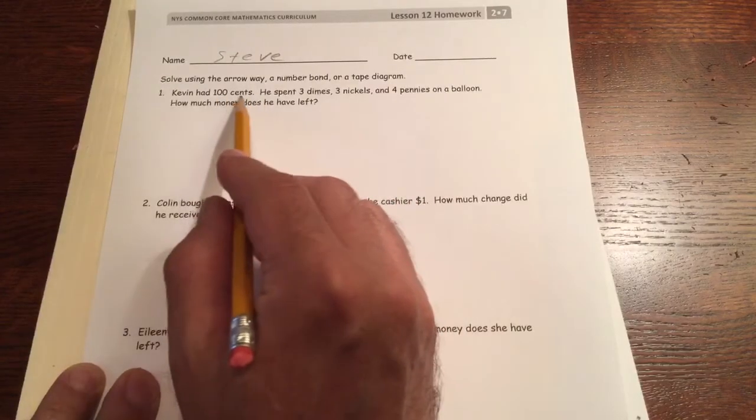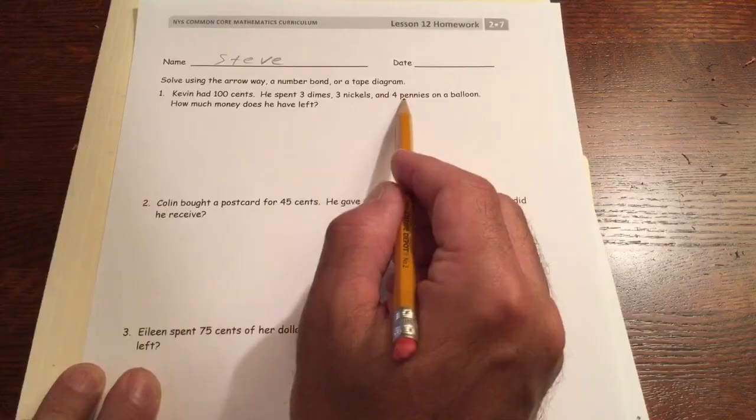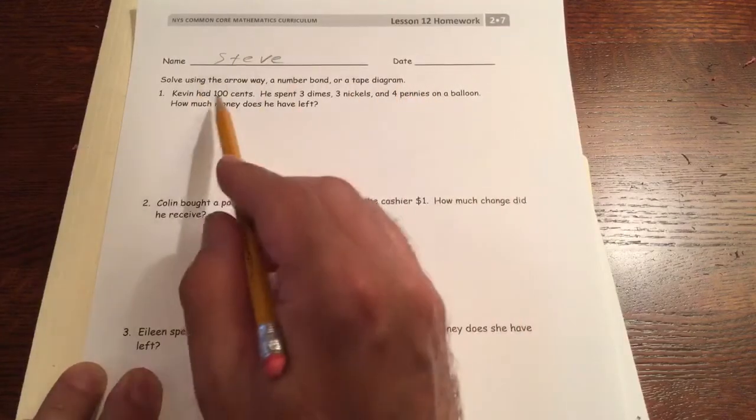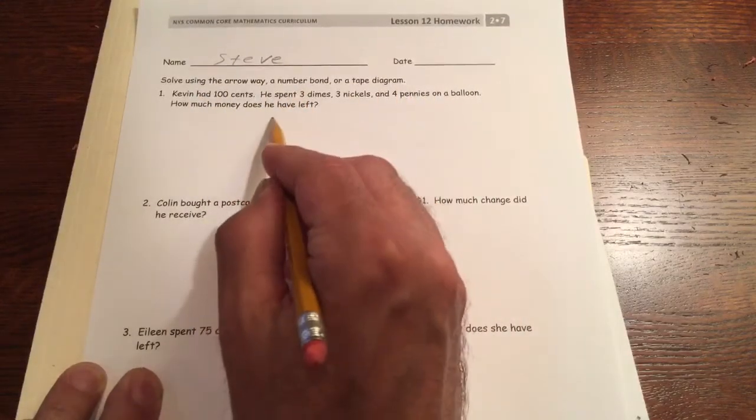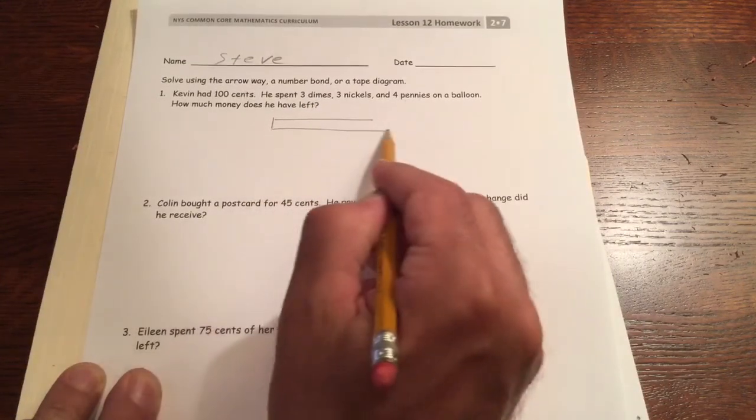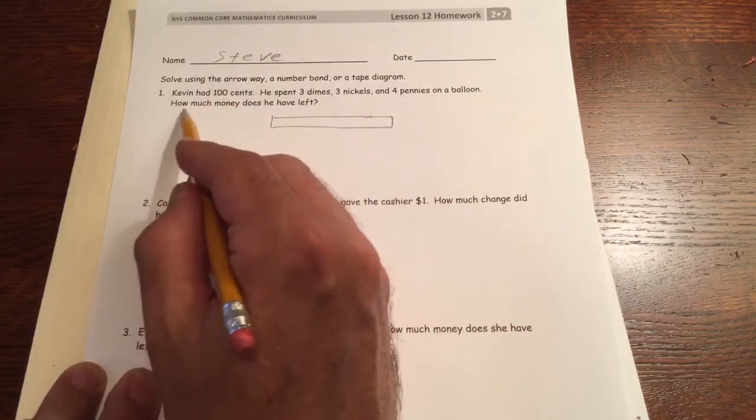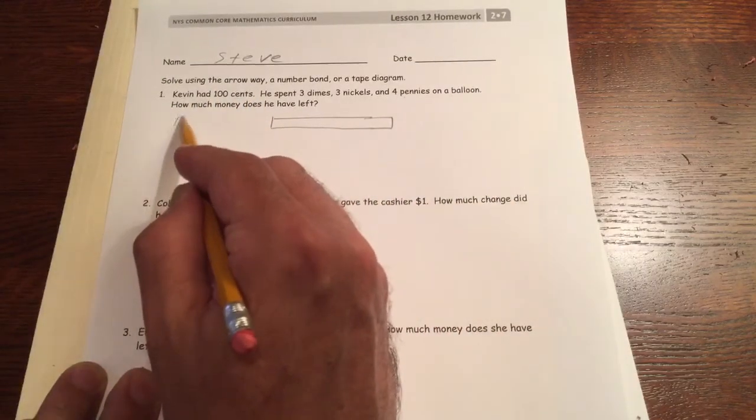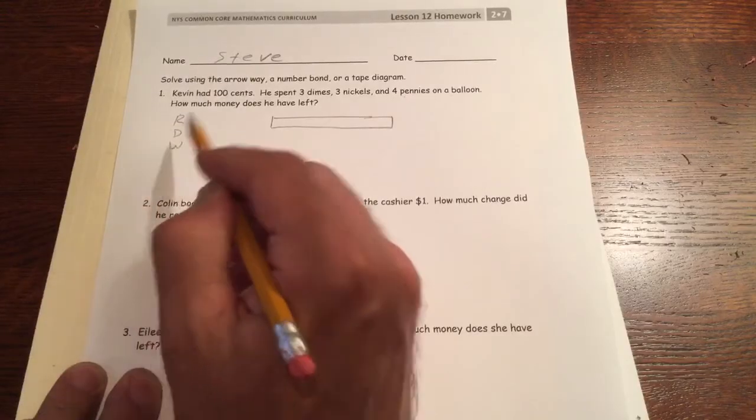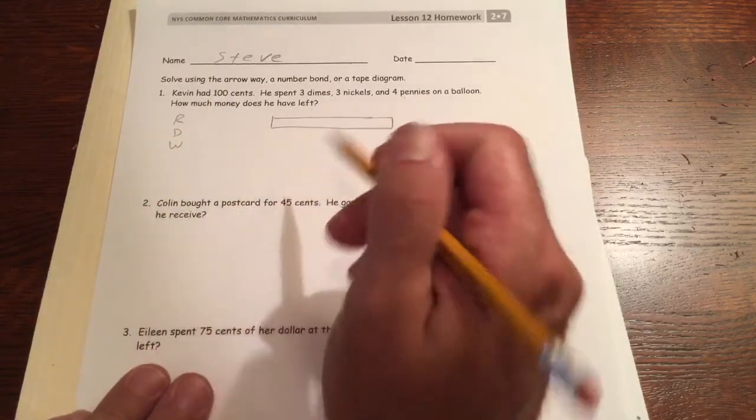Kevin had 100 cents. He spent three dimes, three nickels, and four pennies on a balloon. How much money does he have left? These are all word problems so we're going to RDW all these: read them, draw a picture, write an equation or an answer statement.